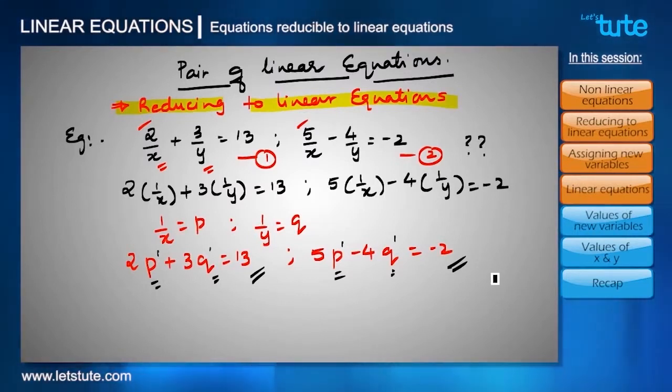And we already know different methods for solving pair of linear equations. Let's take this equation as 1 and this equation as 2. Use any method for solving this pair of linear equations, you will surely get P equals to 2 and Q equals to 3.